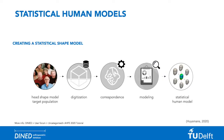Before we look at the different applications for this model, I will first go through the different steps to create such a statistical shape model. The first step is to collect a large database of 3D scans using a digitization technique. To be able to compare them to each other, a correspondence technique is used. After that, a mathematical model is created to express the differences between the different scans and convert it into a statistical human model.